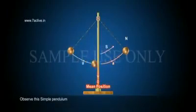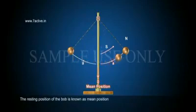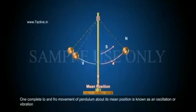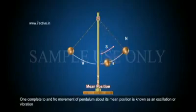Observe this simple pendulum. The resting position of the bob is known as mean position. One complete to and fro movement of pendulum about its mean position is known as an oscillation or vibration.